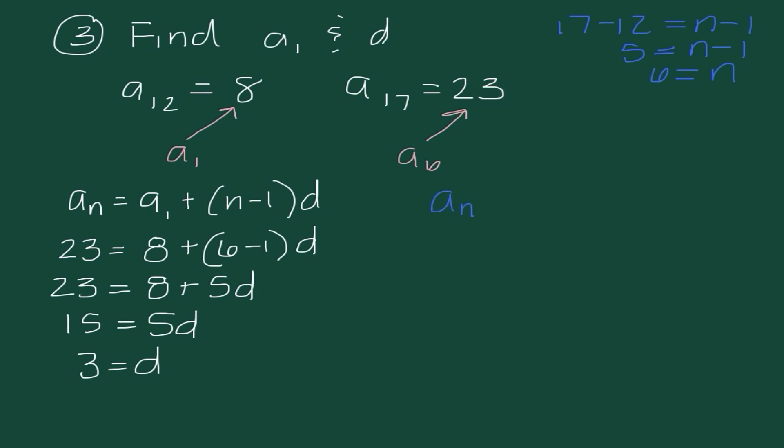So now I'm going to do a sub n equals a sub 1 plus n minus 1 times d. And we know that we've already found one of those answers. And I have some options here. For a sub n, I could either use the 12th term or the 17th term. It really doesn't matter, but I just know whatever I put here affects what I'm going to put for n. So I'm going to use 8 as my nth term, which means my n value would be 12. Because 8 was the 12th term in the sequence. I also know our common difference now is 3. So I have 8 equals a sub 1 plus 11 times 3. So 8 equals a sub 1 plus 33, which tells me that negative 25 is equal to our first term.